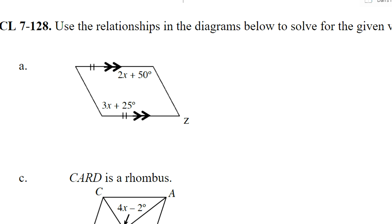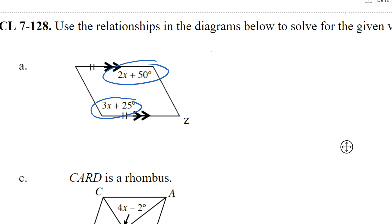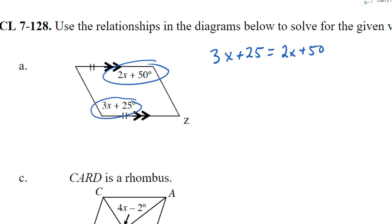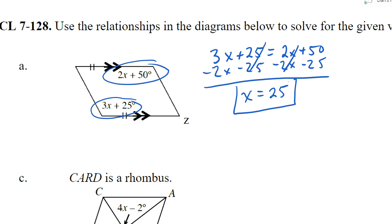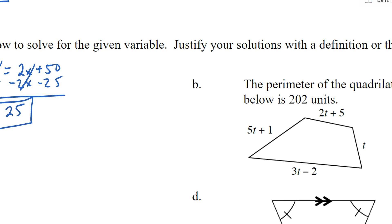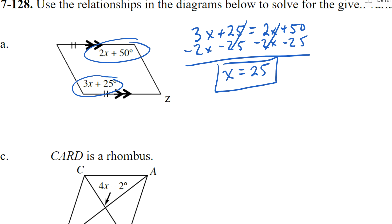On problem 128, we're going to have three quadrilaterals — A and C for sure on the test, plus one slightly different one. For part A, what do I know about those two angles? They're equal in a parallelogram, so set them equal: 3x plus 25 equals 2x plus 50. Subtract 2x and 25 from both sides, giving x equals 25. The theorem is that opposite angles are equal in a parallelogram.